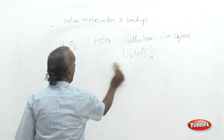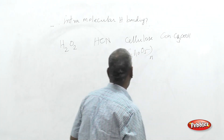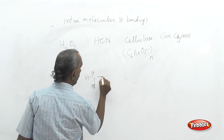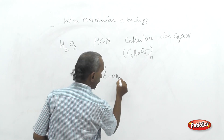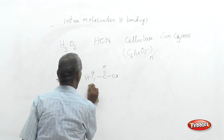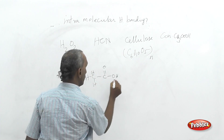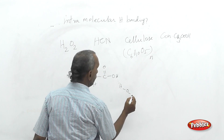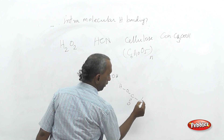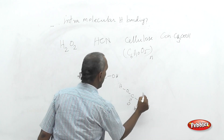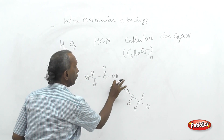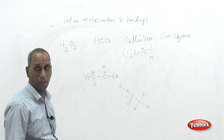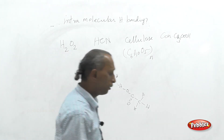For acetic acid (CH₃COOH), the hydroxyl hydrogen is involved in hydrogen bonding. The oxygen and hydrogen interaction here is also between two acetic acid molecules. So acetic acid also exhibits intermolecular hydrogen bonding, not intramolecular.